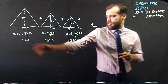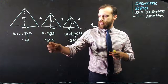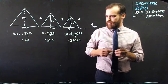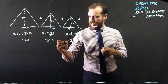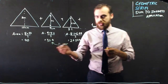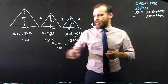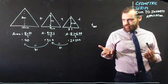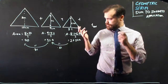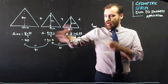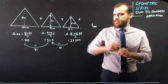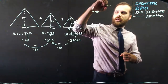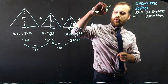It looks like it's going to work, because the area of the first triangle is 40, the area of the second is 32.4, and the area of the third is 26.244. When I divide 32.4 by 40, I get 0.81. And when I divide 26.244 by 32.4, I also get 0.81. So given I have a common ratio, and I've got a first term, I can figure out the sum to infinity. Remember that sum to infinity equals a over 1 minus r.